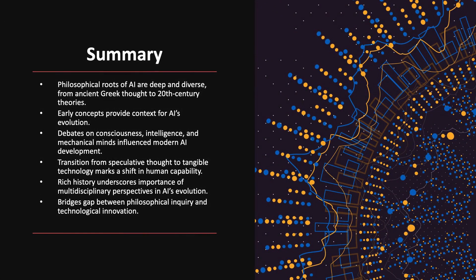In summary, the philosophical roots of artificial intelligence are deep and diverse, extending from ancient Greek thought to 20th century theories. Early philosophical concepts and debates have provided essential context for the evolution of AI, with discussions on consciousness, intelligence, and the possibility of mechanical minds significantly influencing the development of modern AI. The transition from speculative thought to tangible technology marks a remarkable shift in human capability.